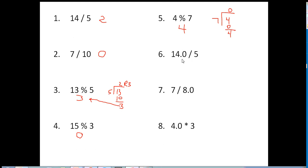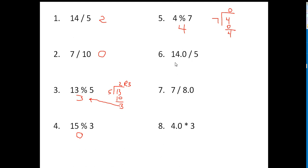Number 6: 14.0 divided by 5 is a double divided by an int. Since one of the operands is a double, the answer has to be a double, or a decimal. So if you do this in the calculator, you'll find out that 14 divided by 5 is 2.8. That's your answer, because it's got to be the decimal. Now, if you didn't have the 0.0, the answer would just be 2, because that would be an int divided by an int.